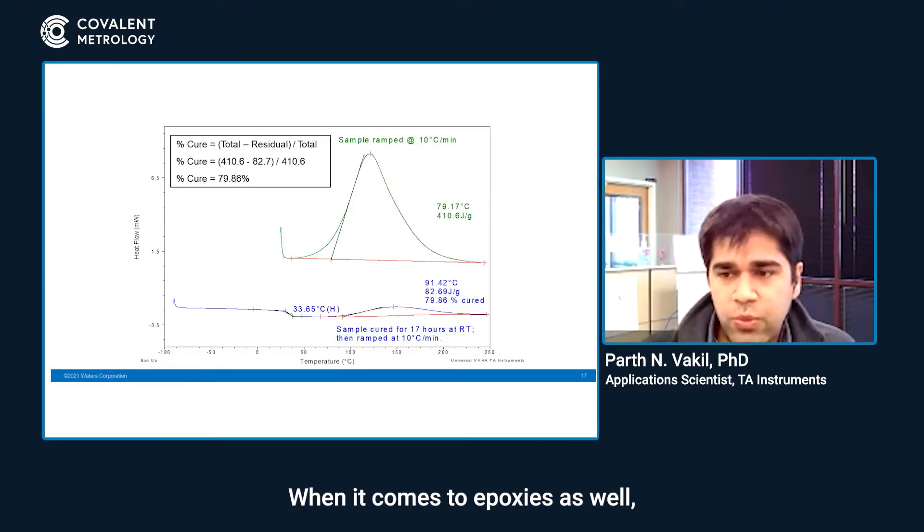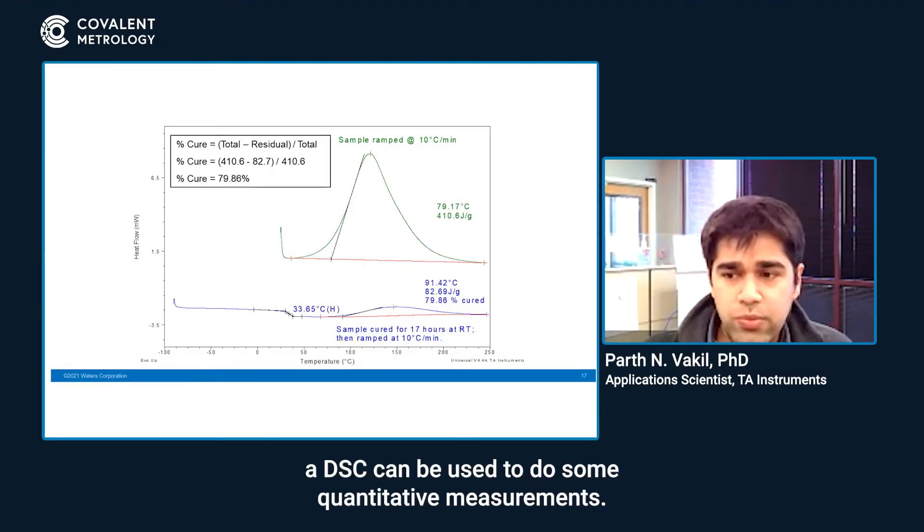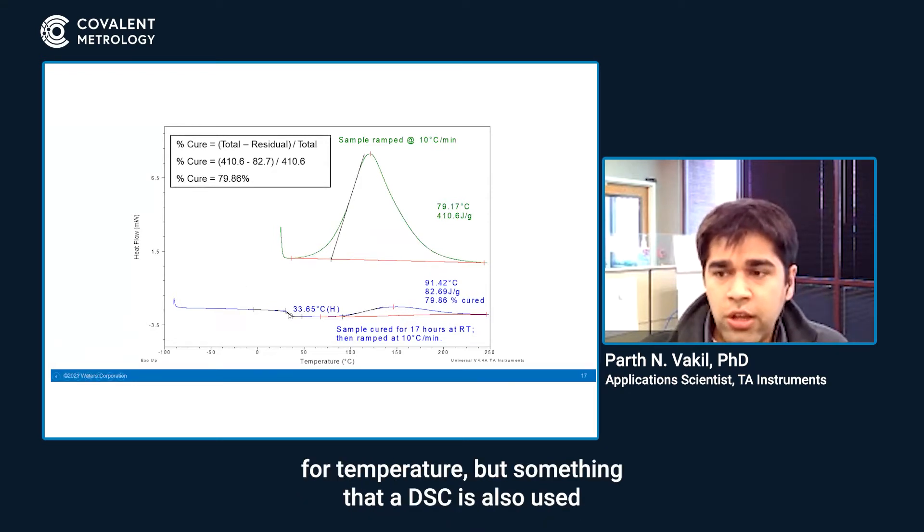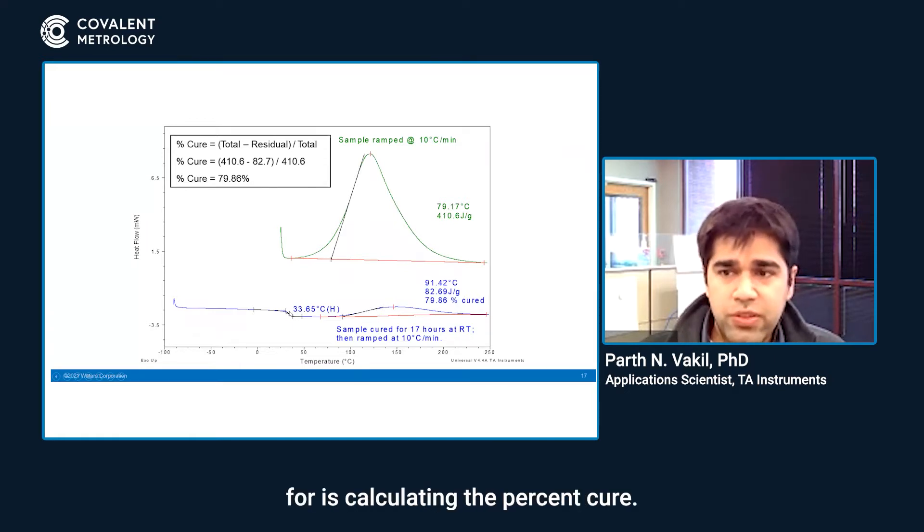When it comes to epoxies, a DSC can be used to do quantitative measurements. The TG is a quantitative measurement that gives you a value for temperature, but something that a DSC is also used for is calculating the percent cure.